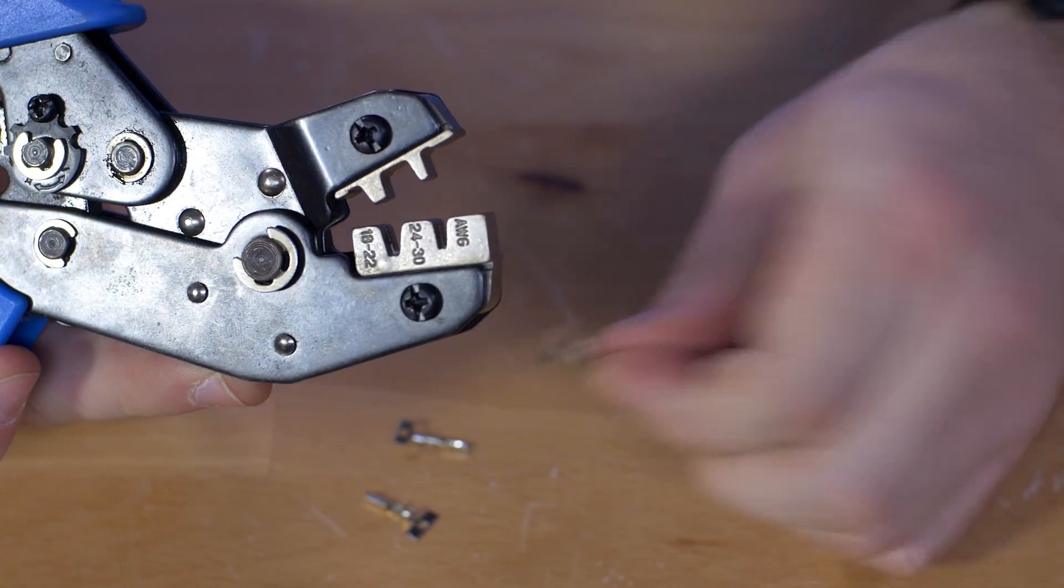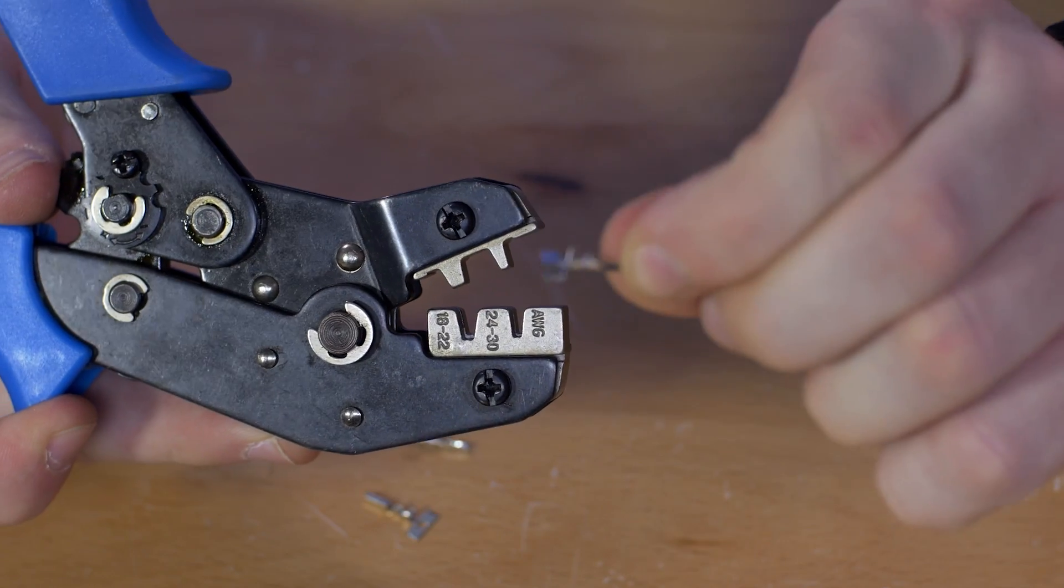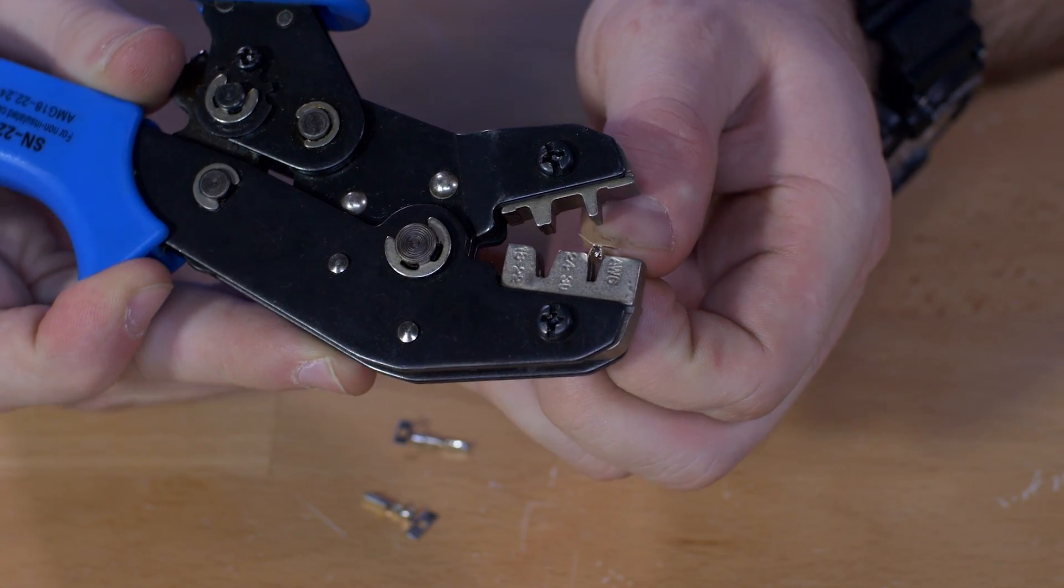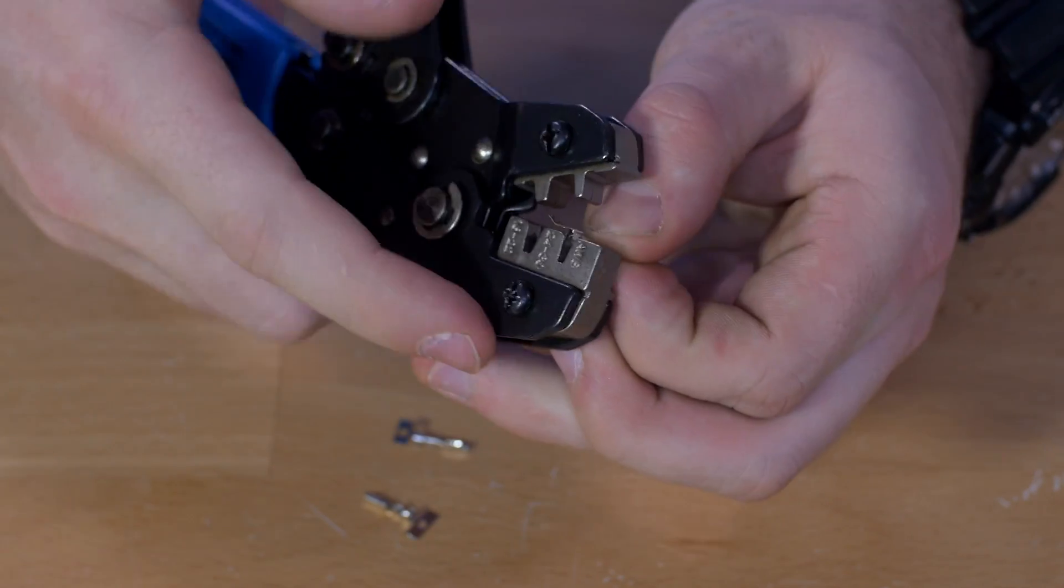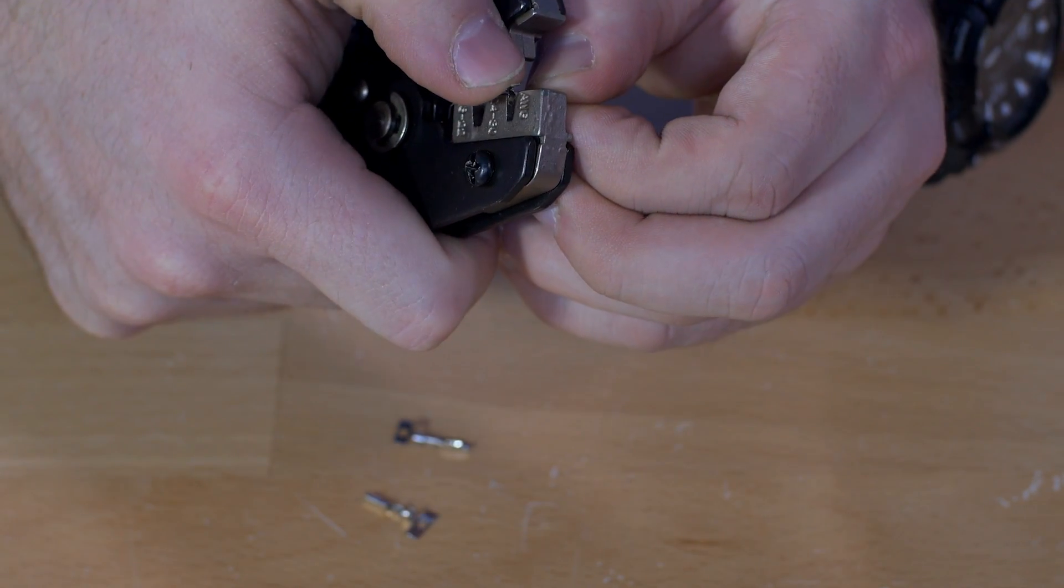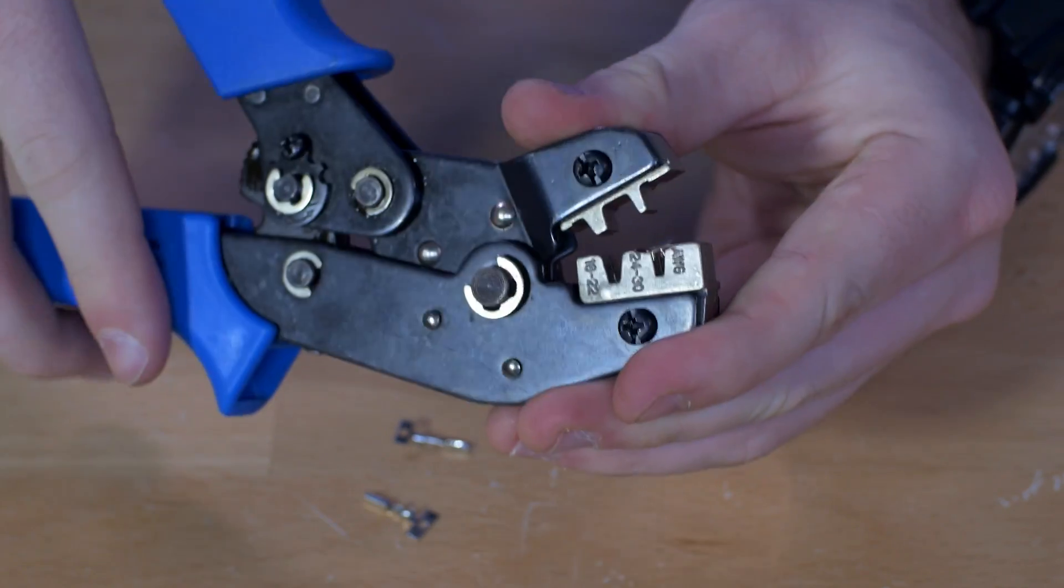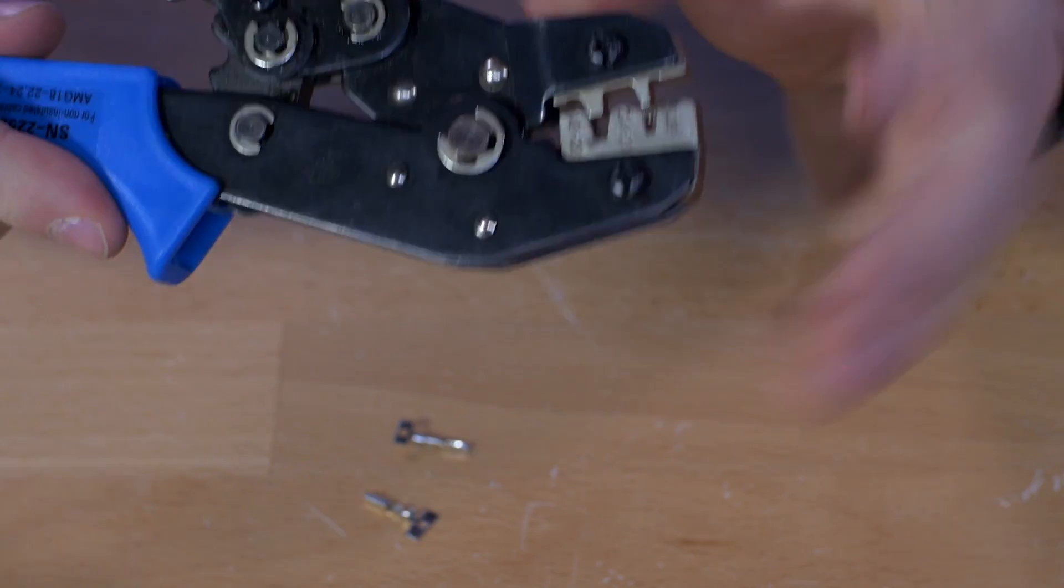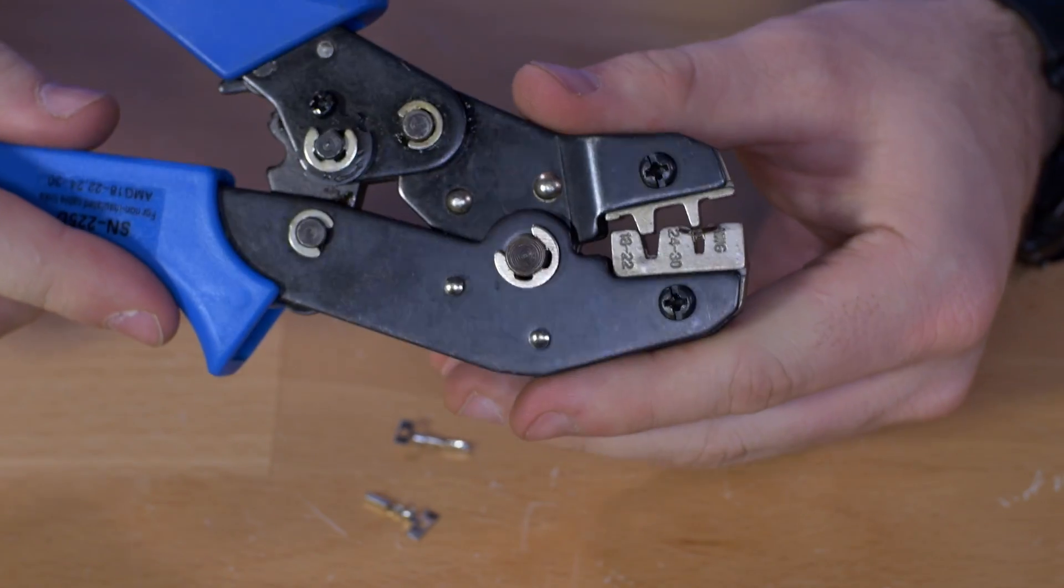Once you have your pins separated, you're going to place your pin inside the side that doesn't move so that the pin is facing down towards the opening and it'll slide inside there. What I like to do to hold it in place is bring that down just till it clicks once and that'll hold it in place.